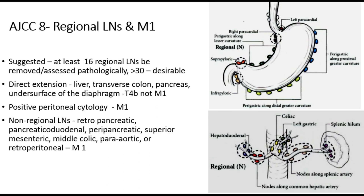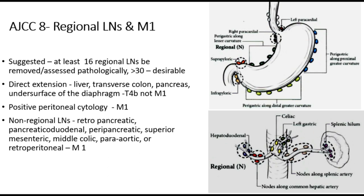Positive peritoneal cytology will be M1. Non-regional lymph nodes include retropancreatic, pancreaticoduodenal, peripancreatic, paraaortic, splenic hilar, middle colic, and retroportal nodes. There is a discrepancy between the AJCC and Japanese classification — for example, retropancreatic nodes are station 13 in the Japanese classification. In the subsequent part of the video, we have covered in detail the lymph node stations and type of lymphadenectomy required in carcinoma stomach.